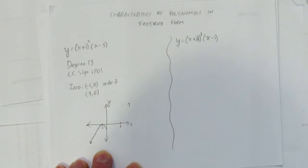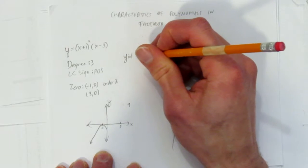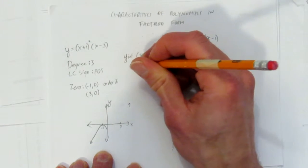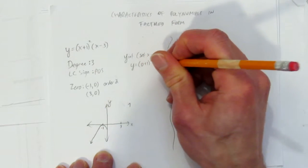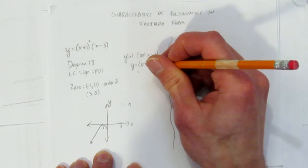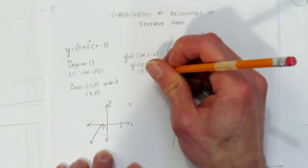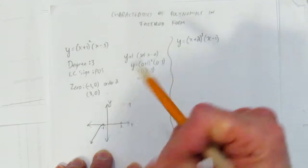Oh, we could find its y-intercept, though, and be more accurate. Why don't we check what its y-intercept is? For the y-intercept, set x equal to 0. So if you set x equal to 0 there, you'd get y equals 0 plus 1 squared times 0 minus 3, which gives you 0 plus 1 is just 1 squared, which is 1. And then 0 minus 3 is just negative 3. So now we know it actually crosses right at negative 3. So we could be a little more accurate.